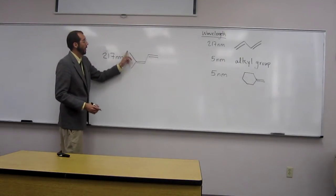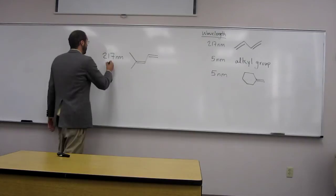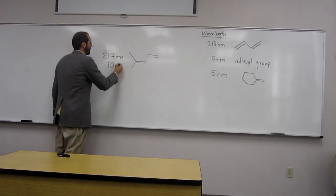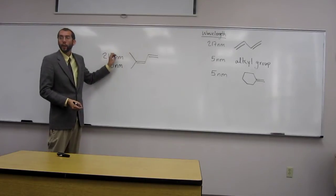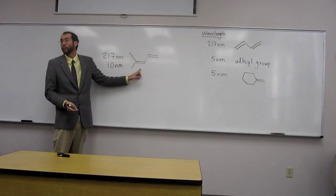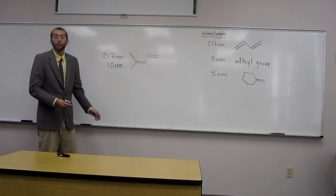So there's one, two alkyl groups here, so 10 nanometers. So the only difference is, because this is not a ring, that's not an exocyclic double bond, so we don't add that last portion to it.